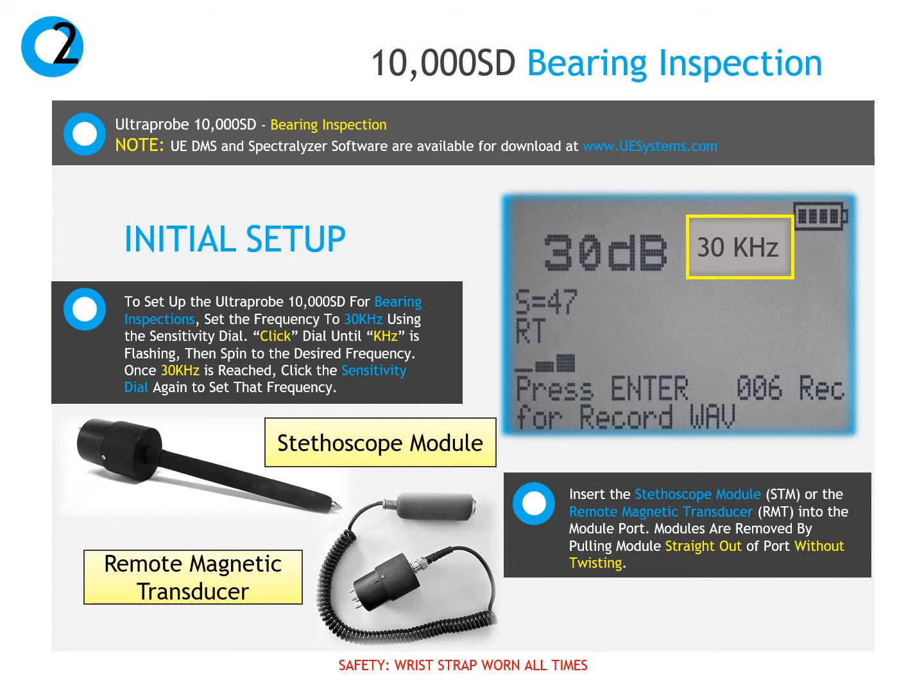Next, insert either the stethoscope module or the remote magnetic transducer in the module port. Remember that the modules are changed by pulling straight out of the port without twisting, and insert the new module in until it is seated firmly into the port.